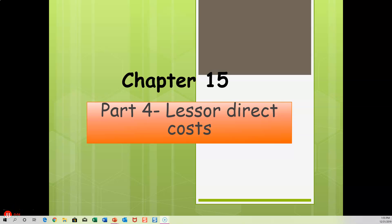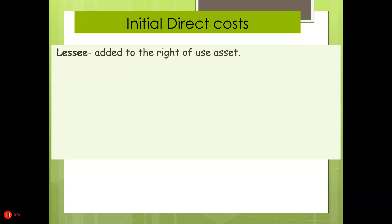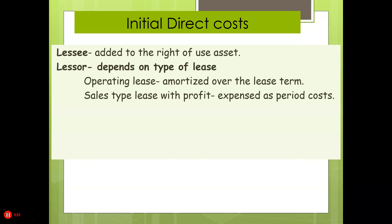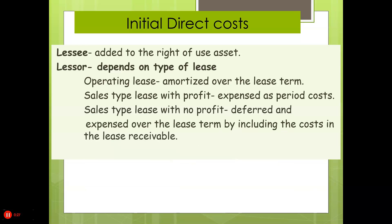Chapter 15 Part 4 — the lessor and how they deal with direct costs. For the lessee, initial direct costs are added to the right-of-use asset. For the lessor, it depends on the type of lease: for an operating lease, costs are amortized over the lease term; for a sales-type lease with profit, expensed as period costs; and for a sales-type lease with no profit, deferred and expensed over the lease term by including the costs in the lease receivable.